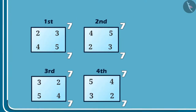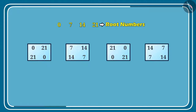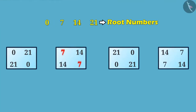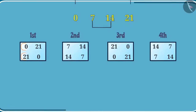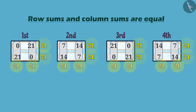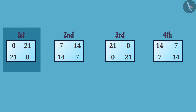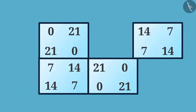Now I will make four small Latin squares by using the root numbers. It's worth noticing that I have used the equal placement of numbers while choosing the numbers from 0, 7, 14 and 21. In these squares, the row sums and column sums are equal, whereas the diagonal sums are not the same. Remember that in the first Latin square the smaller square and its reflection is fixed one below the other, so here I will fix these squares diagonally.